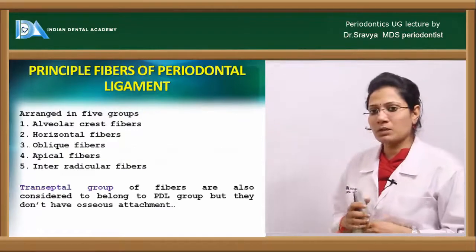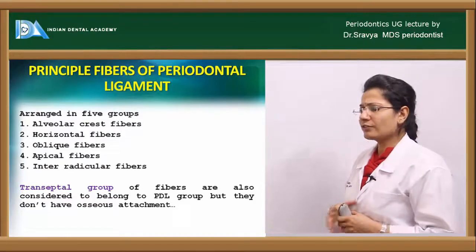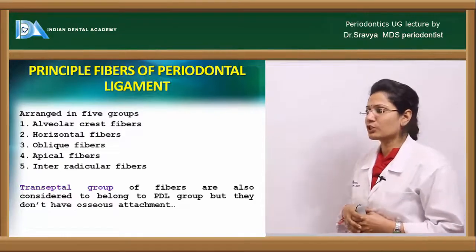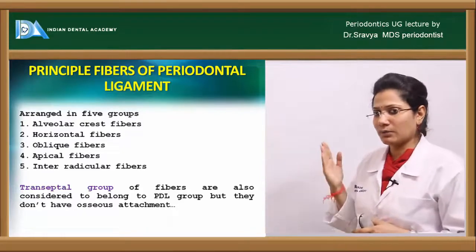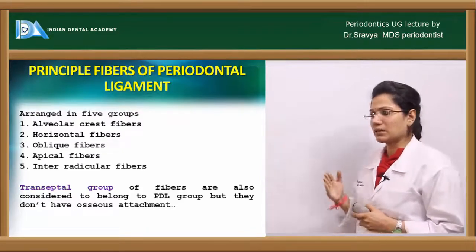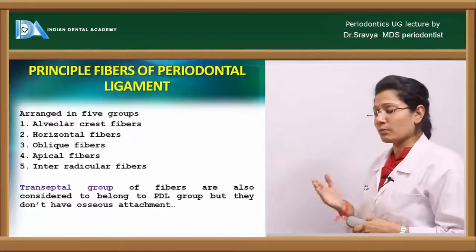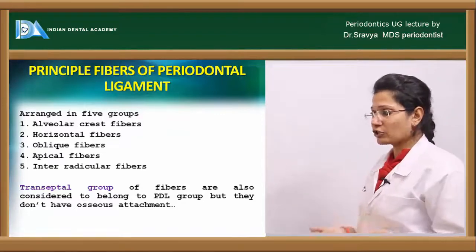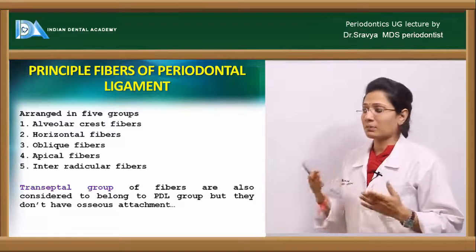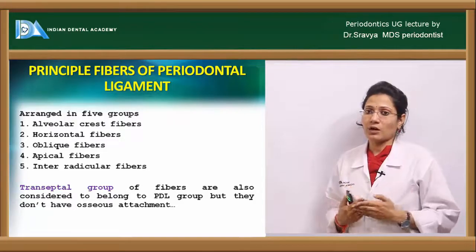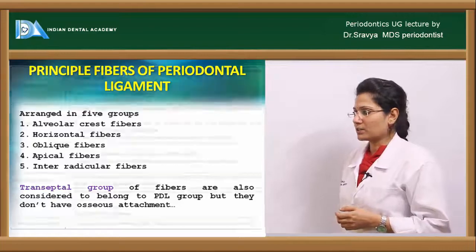The principal fibers of the PDL include five groups: alveolar crest fibers, horizontal fibers, oblique fibers, apical fibers, and interradicular fibers. There is also a transseptal group of fibers which are gingival group fibers but are still considered one of the important principal fibers of the periodontal ligament.